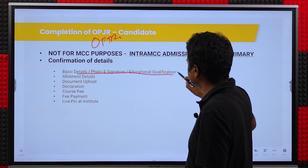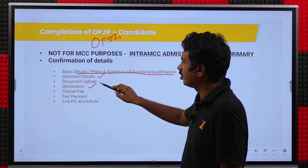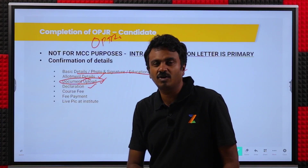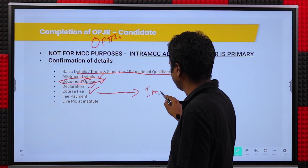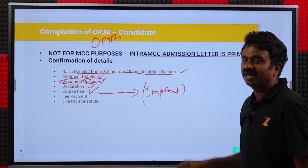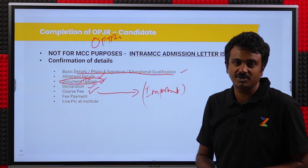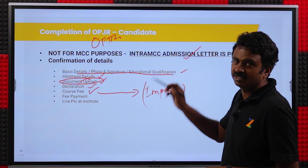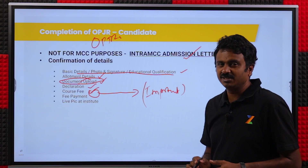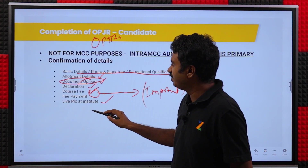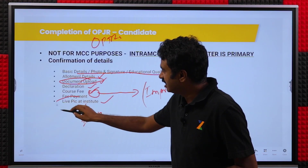What are the processes that need to be completed in OPJR? Basic details, photo, and signature — you check and confirm. Your declaration — you provide a declaration. You check your allotment letters. Documents have to be uploaded — there are about five documents to be uploaded. Course fee has to be paid — this is an important step within OPJR. Last time OPJR was not functioning, so many candidates were able to join even without fee payment because the IntraMCC admission letter was critical. Institutes have been instructed to allow this. There is also a live picture at the institute that needs to be taken from the institute side.